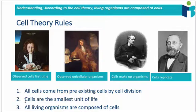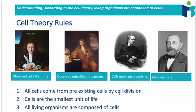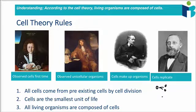The first rule is that all cells come from pre-existing cells. They don't just pop up out of the blue or crystallize from existence, although people used to believe this. They all have to come from a pre-existing cell, so one cell always turns into new cells — you never get some popping up on their own.